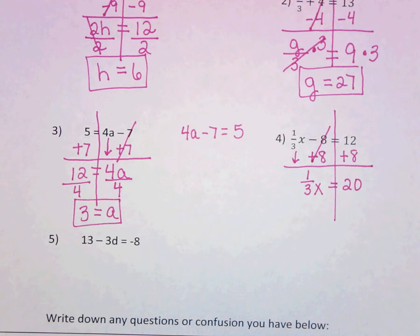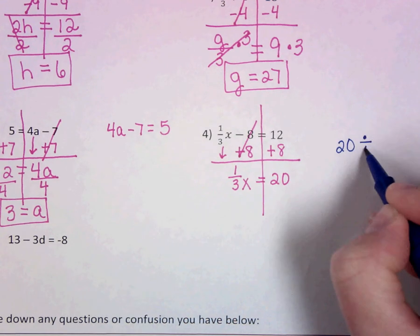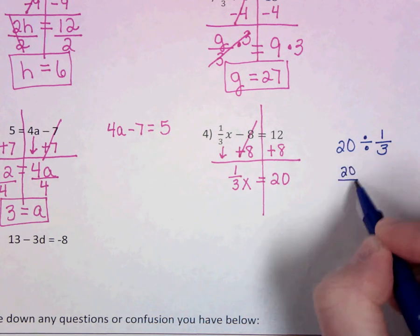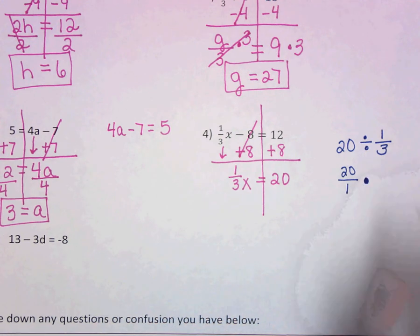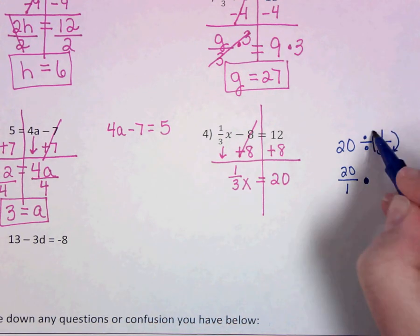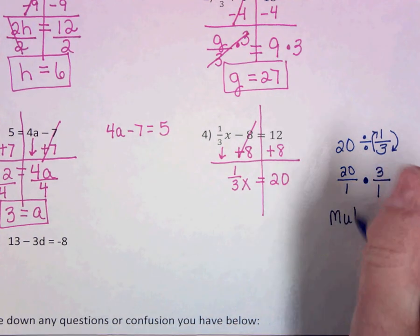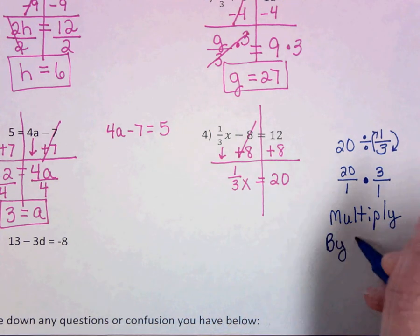Now, 1 third X does mean 1 third times X. But the opposite would be to divide. Now, let's take a little side note here. If I'm going to divide 20 divided by 1 third, remember, to divide fractions, we keep change flips. We change division to multiplication, and we flip the second fraction. So really, we end up just multiplying by the reciprocal. When we divide, we are just multiplying by the reciprocal, which is the flip.